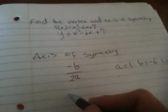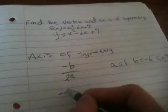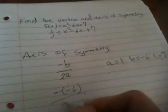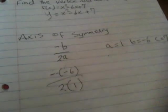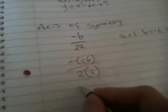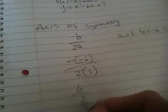Now, -b equals -(-6) divided by 2a, which is 2(1). Negative times negative is positive, so we have 6 divided by 2.